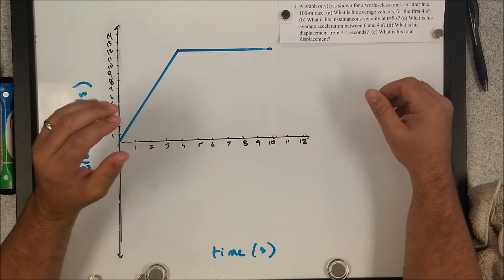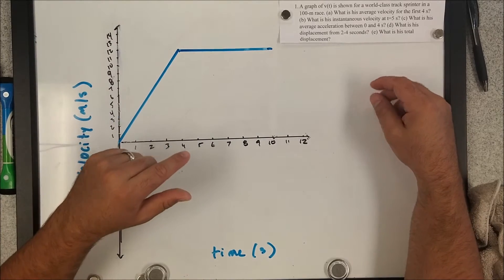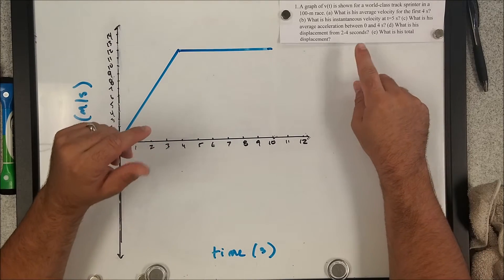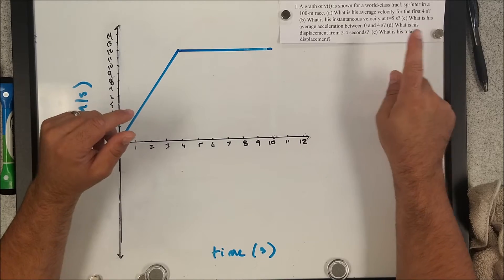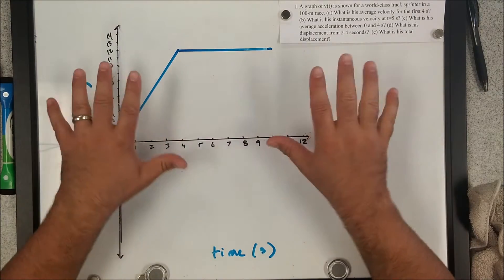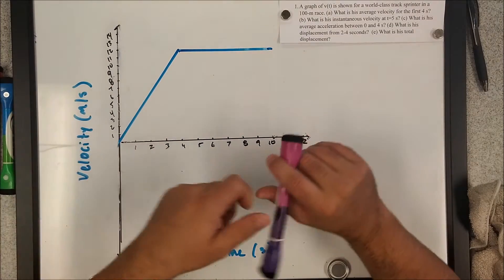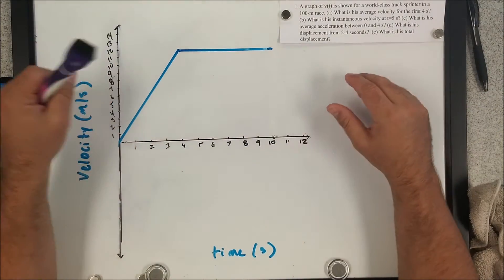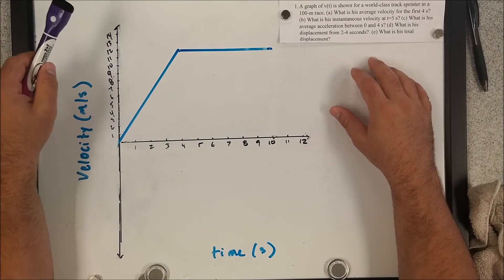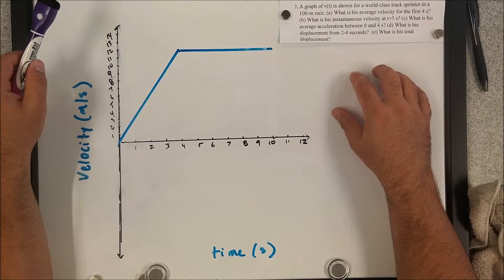So we've got this velocity time graph for a world-class track sprinter in a 100 meter race. We want to know the average velocity for the first four seconds. Then we want to know the instantaneous velocity at t equals five seconds. What is the average acceleration between zero and four seconds? What is the displacement from two to four seconds? And then finally, what is the total displacement? My work's gonna be all over the place. I might not have enough room for everything, so I might have to erase some. Try to write this stuff down as you go as well.